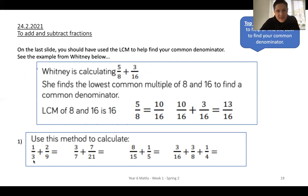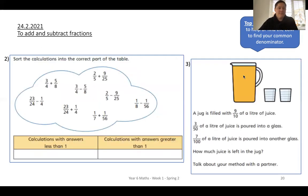Now, let me tell you that these questions here, they're what I would call easy ones because you only have to change one of the fractions in the question. Now, sort the calculations into the correct parts of the table. So, we've got answers with less than one and then answers that are greater than one. Now, how are we going to know if it's greater or less than one?